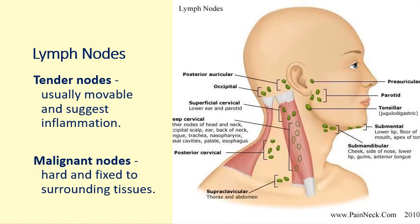We also assess the lymph nodes. A tender, movable lymph node suggests inflammation, whereas a hard, fixed lymph node suggests malignancy. The lymph nodes assessed include preauricular, parotid, tonsillar, postauricular, occipital, cervical, submental, submandibular, posterior cervical, and supraclavicular. You also check lymph nodes in the chest area, going towards the armpit and arms.